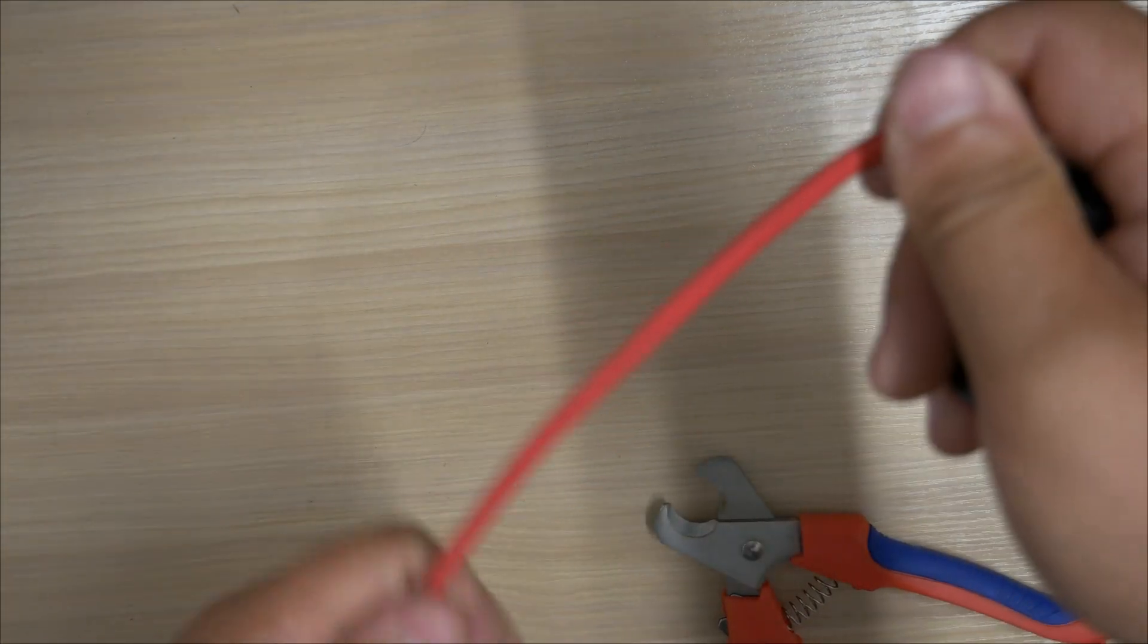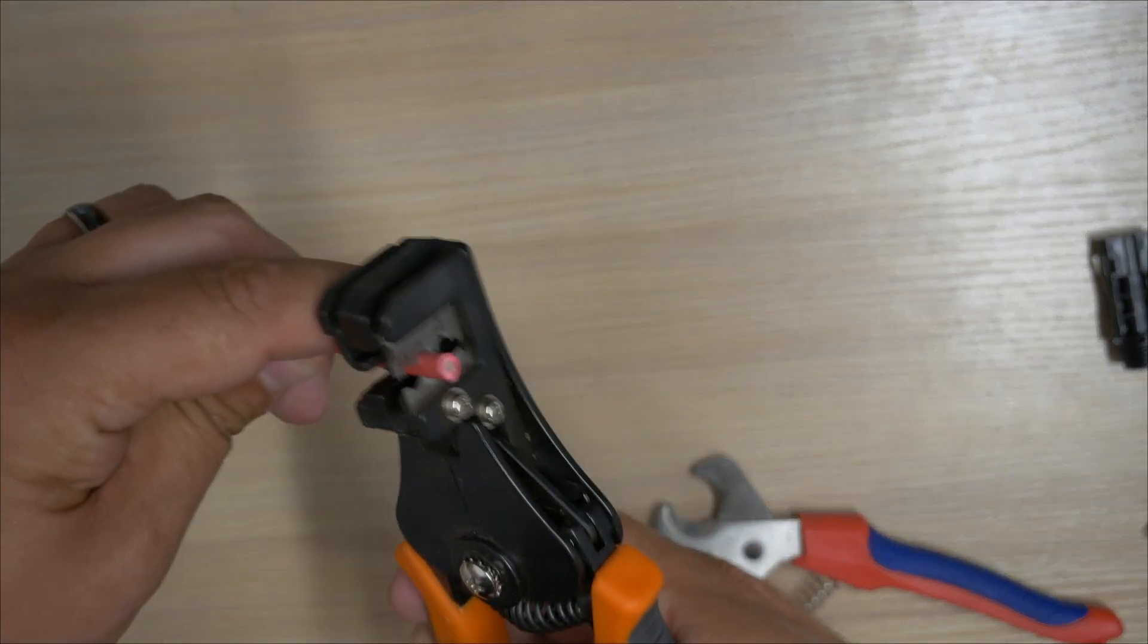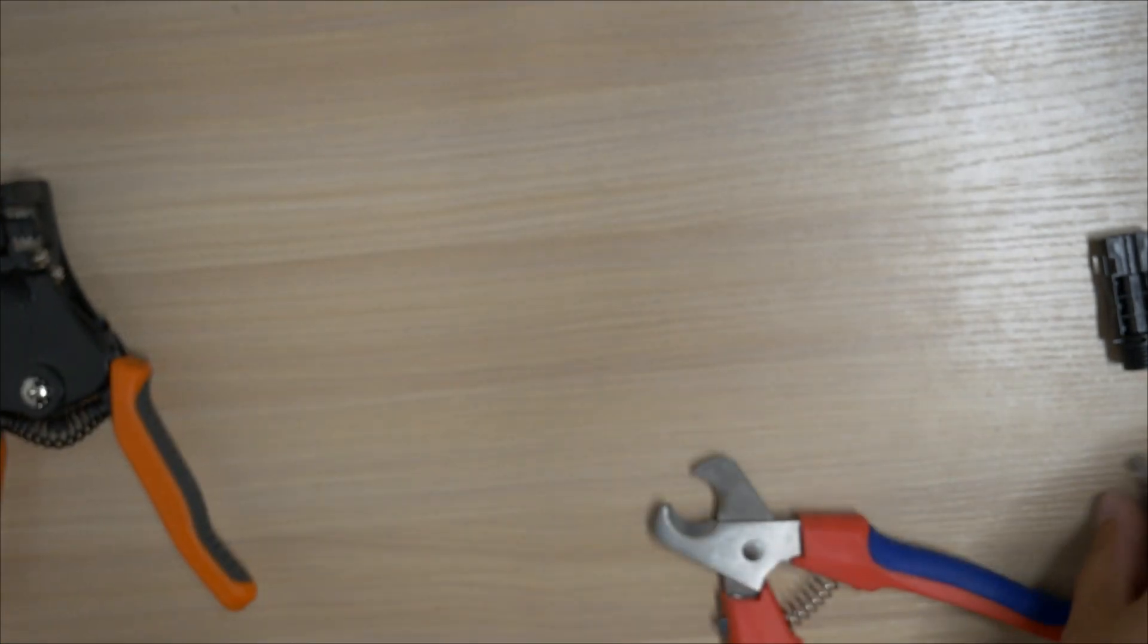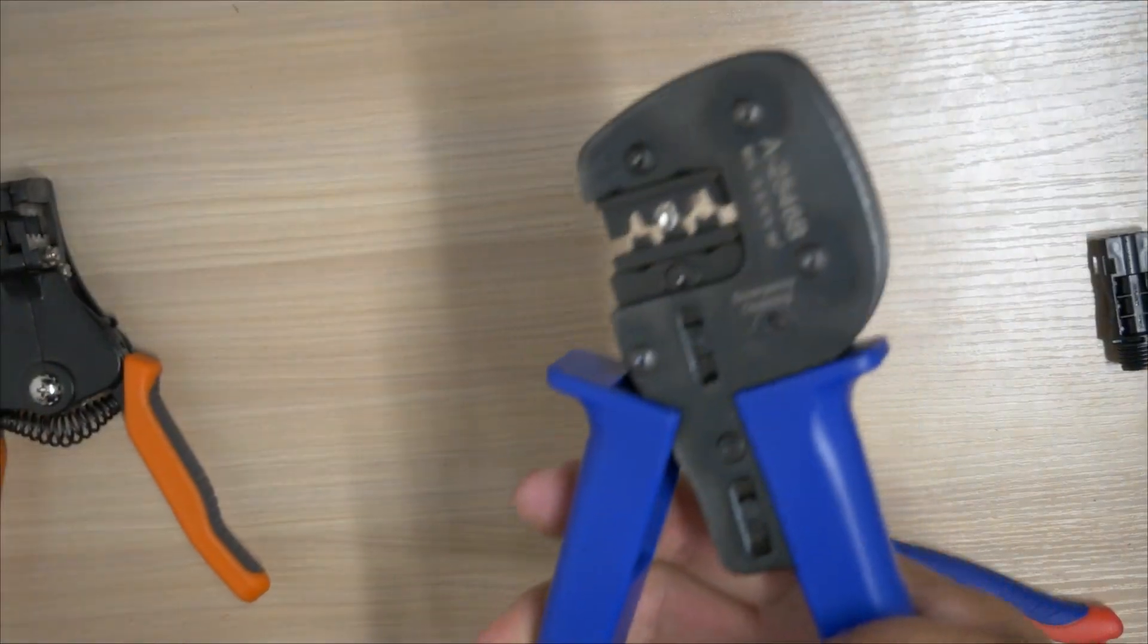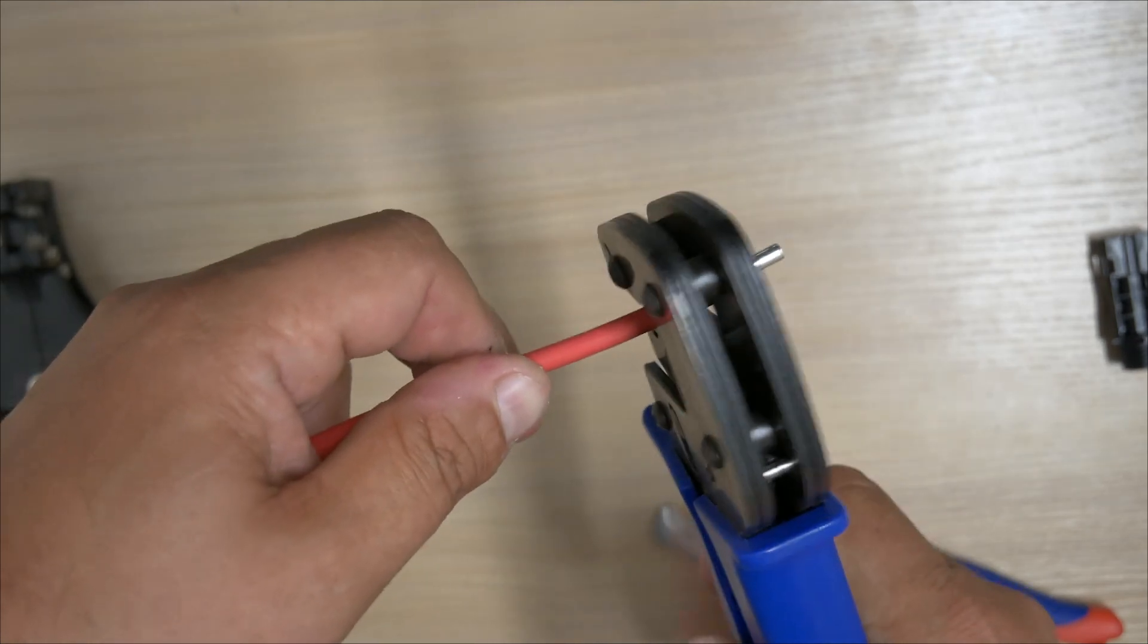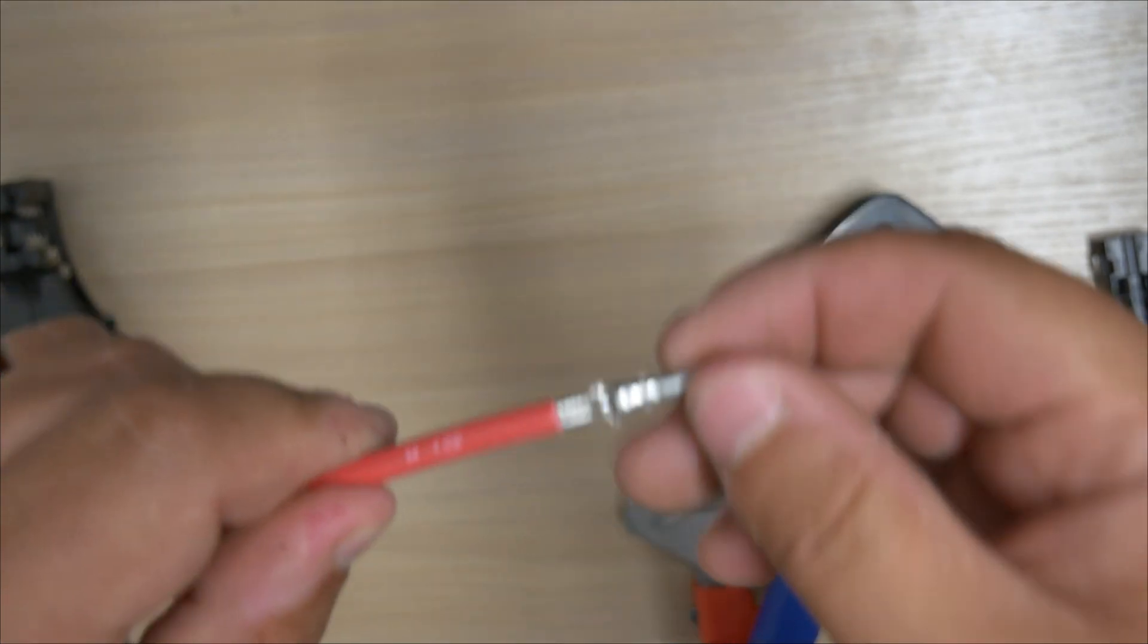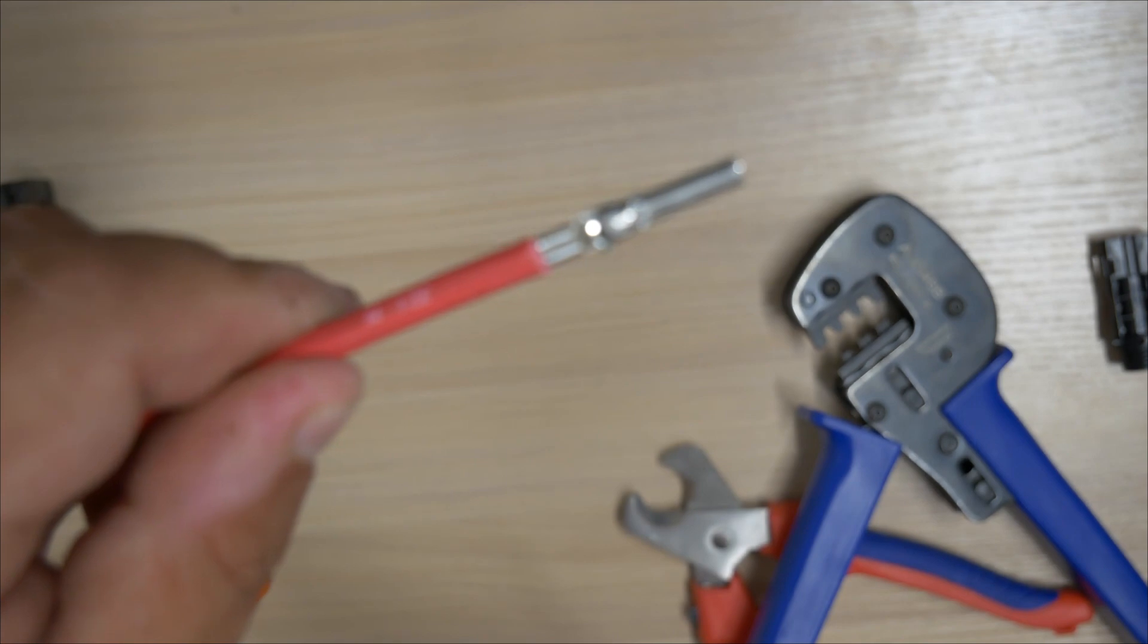We then need to strip the end again in the 4mm hole, taking off about 8 to 10mm. Pop the crimp into the back of the crimping tool and hold that in place. Insert the cable in through the back of the crimp. Squeeze together. And then check to make sure everything is in there nice and correctly as it is.